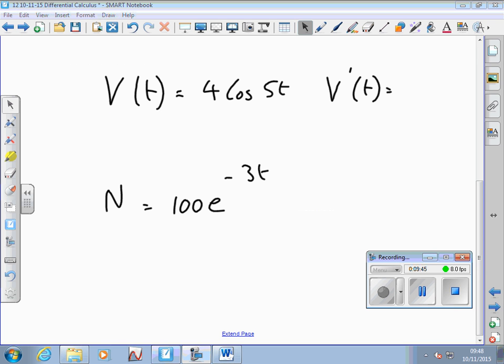So next one, N equals 100 e to the minus 3t. This is an example of an exponential decay function. This is our start value, 100% of it, say. And this is a decaying investment over time. And this is telling me what I'm going to have left in my account after a certain number of times, say maybe if time was measured in years.